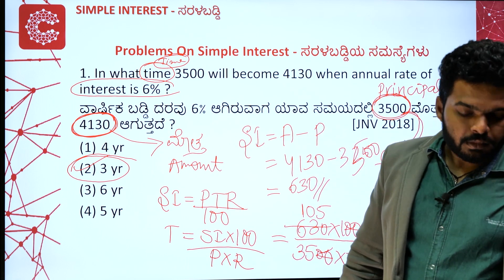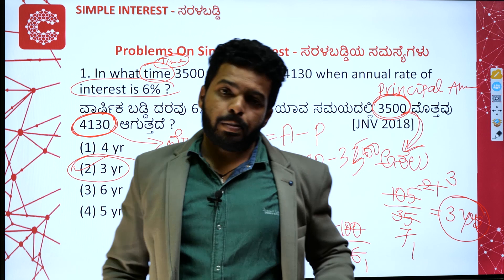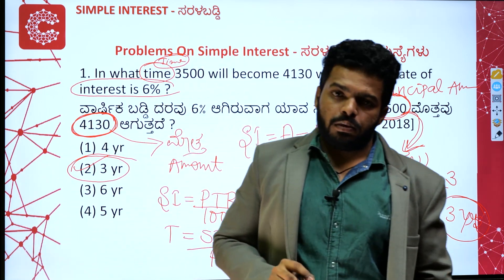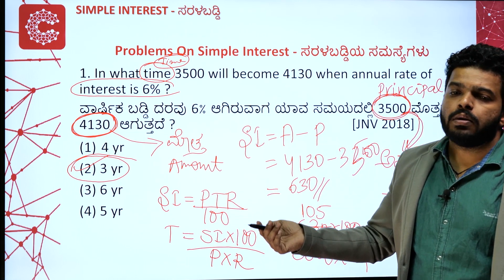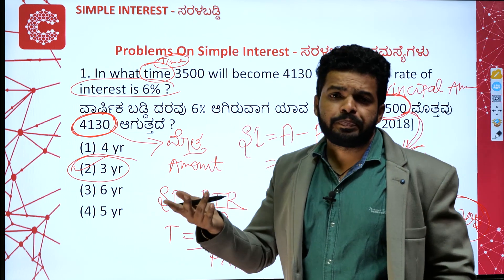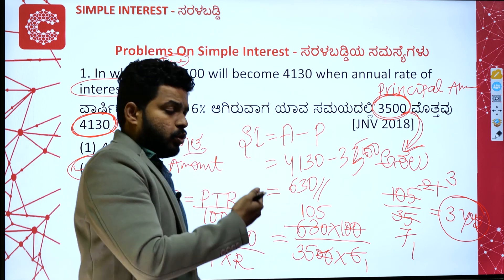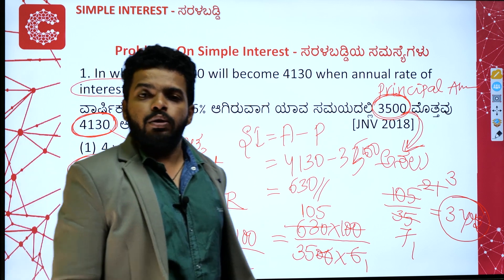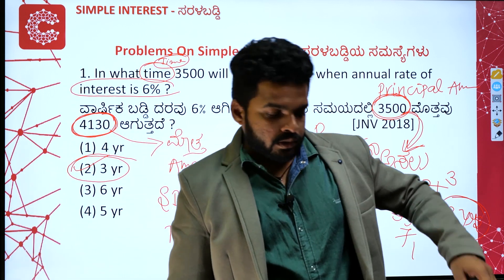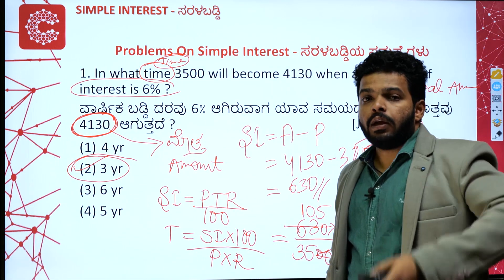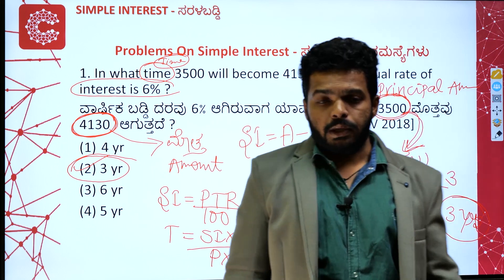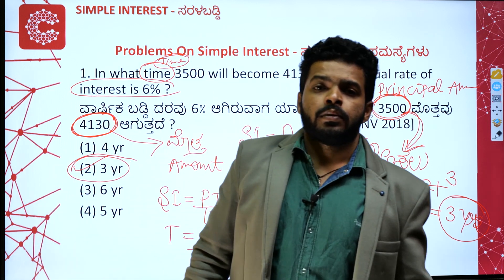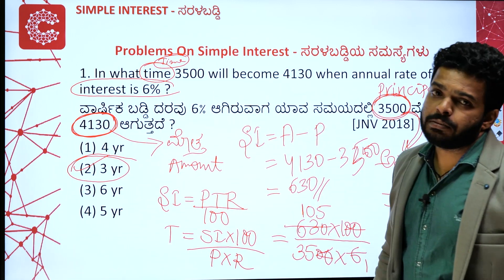It's very easy! No confusion. First find simple interest by subtracting principal from total amount. Then use the formula T = SI × 100 / (P × R) to get the time. This method is straightforward — get P value, R value, SI value, and then find T. Practice more questions from the examination. It's very easy!